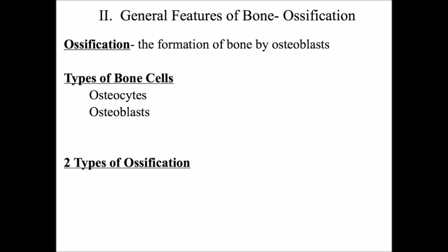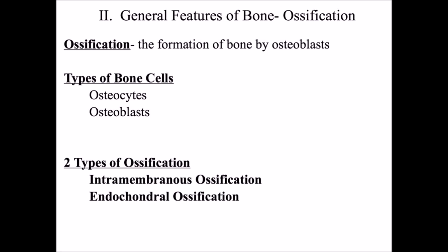There are two types of ossification — two ways of making bone. The first is intramembranous ossification: 'intra' means inside or in between, 'membranous' refers to membranes, and ossification means making bone — so intramembranous ossification is the making of bone between connective tissue membranes. The second is endochondral ossification: 'endo' means inside and 'chondral' refers to cartilage — so it is the process of making bone within cartilage.